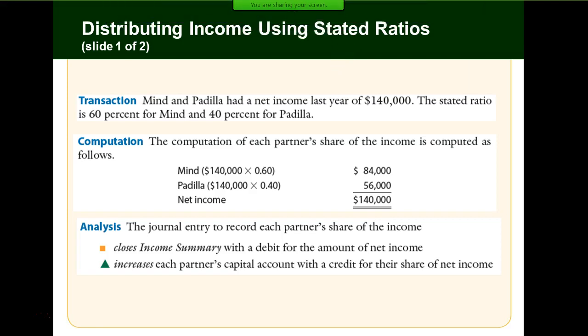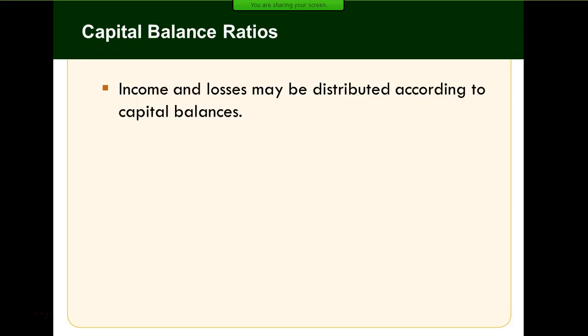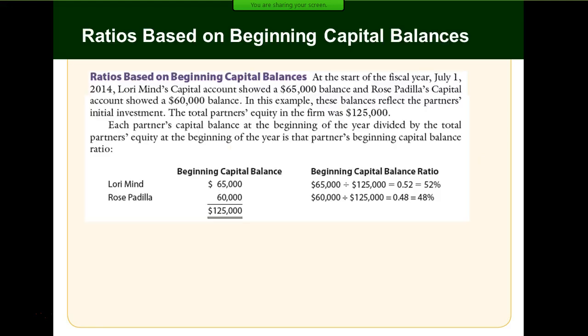The journal entry to allocate that income shows income summary as a debit and credits each partner based on their specific allocation. We can also allocate income or losses according to capital balances, using a ratio based on the partners' capital balances at the beginning of the year or averaged over the year.